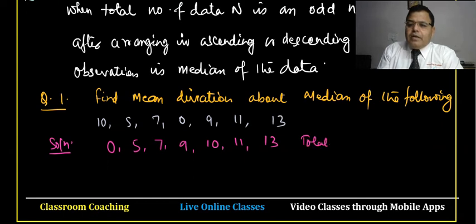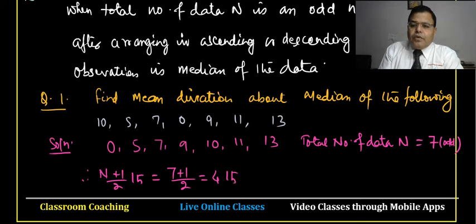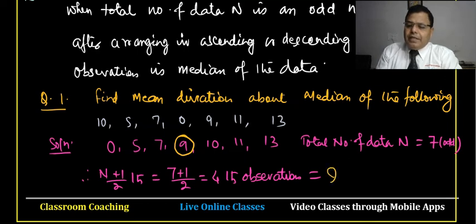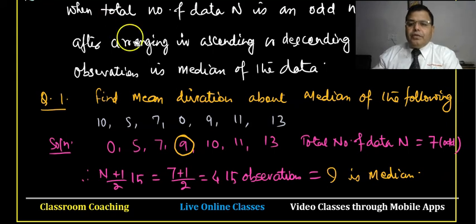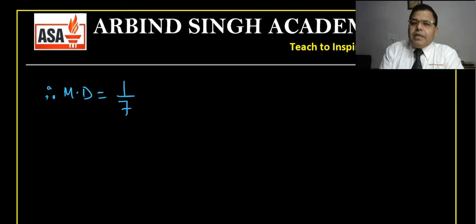Here the total number of data n = 7, which is odd. Therefore the median is the (n+1)/2 th observation = (7+1)/2 = 4th observation. Counting: 1st=0, 2nd=5, 3rd=7, 4th=9. So the 4th observation is 9, and therefore the median M = 9. Now we can calculate the mean deviation. The formula is: MD = (1/7) × Σ|xi − M|.